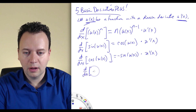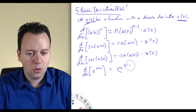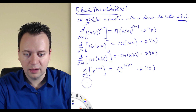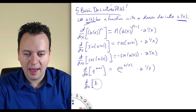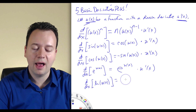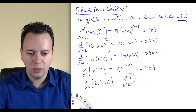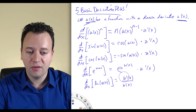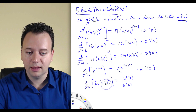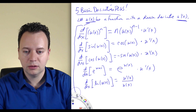Then we have the derivative of e to the u of x — we just treat it like normal, it's e to the u of x, and then we multiply by the derivative of u. Finally, the derivative of ln of u of x: the derivative of ln of u is 1 over u, and then times u prime. So I put u prime in the numerator — the derivative of ln of u of x is u prime of x over u of x. When you have ln of something, it's the derivative over the original. These are the five basic derivatives plus.